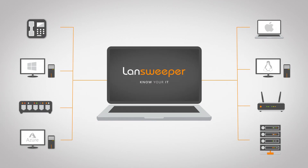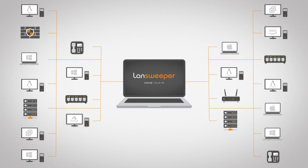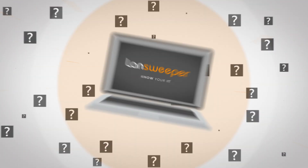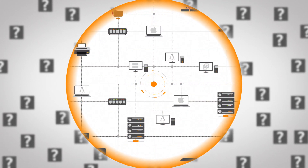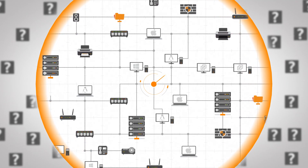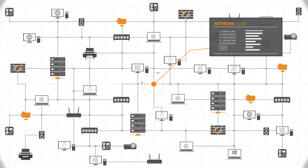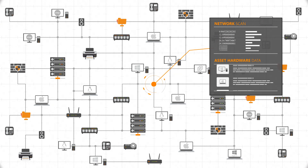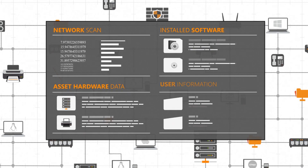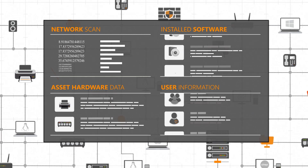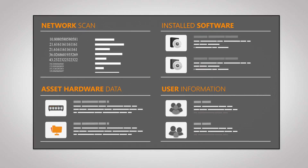Landsweeper offers you a complete and accurate overview of what is going on in your network, automating your IT asset management completely. Landsweeper's deep-scan technology discovers networks of all sizes. It automatically explores any IT environment using a wide range of network protocols. Depending on the asset types found, Landsweeper then retrieves all types of device-specific hardware information, as well as an extensive list of installed software and user logon information.